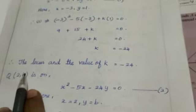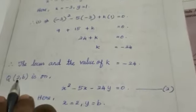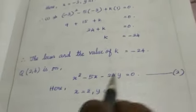Now the point q 2 comma b is on this given equation. You have to take this 2 as x and y as b. Substitute the values in equation number 2. That means you will be getting 2 square minus 5 into 2 minus 24 into b equal to 0.